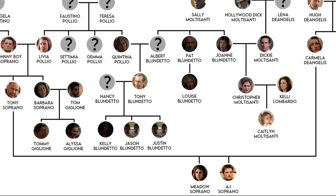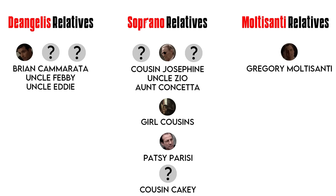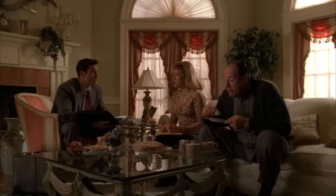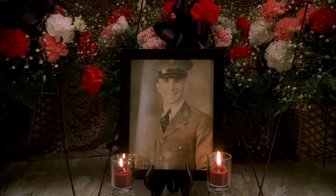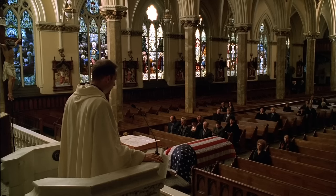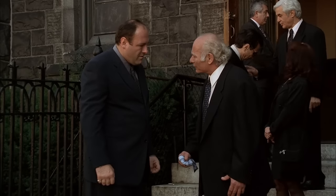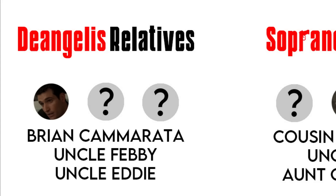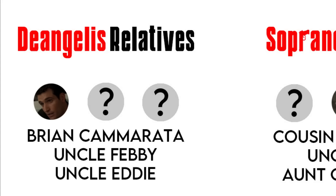Carmela, of course, would then marry Tony Soprano and have two children, Meadow and AJ. Now, that's all for the family members that we know how they are related. However, there are a few relatives mentioned where we aren't given an exact relationship. For example, Brian Camerata — Carmela brings up the fact that he's her cousin, but we don't know if that's on her mother or her father's side. Also, in the episode Another Toothpick, they attend the funeral of Carmela's uncle, Febby. Again, unknown where he fits in. Finally, for Carmela's side, there's her Uncle Eddie.